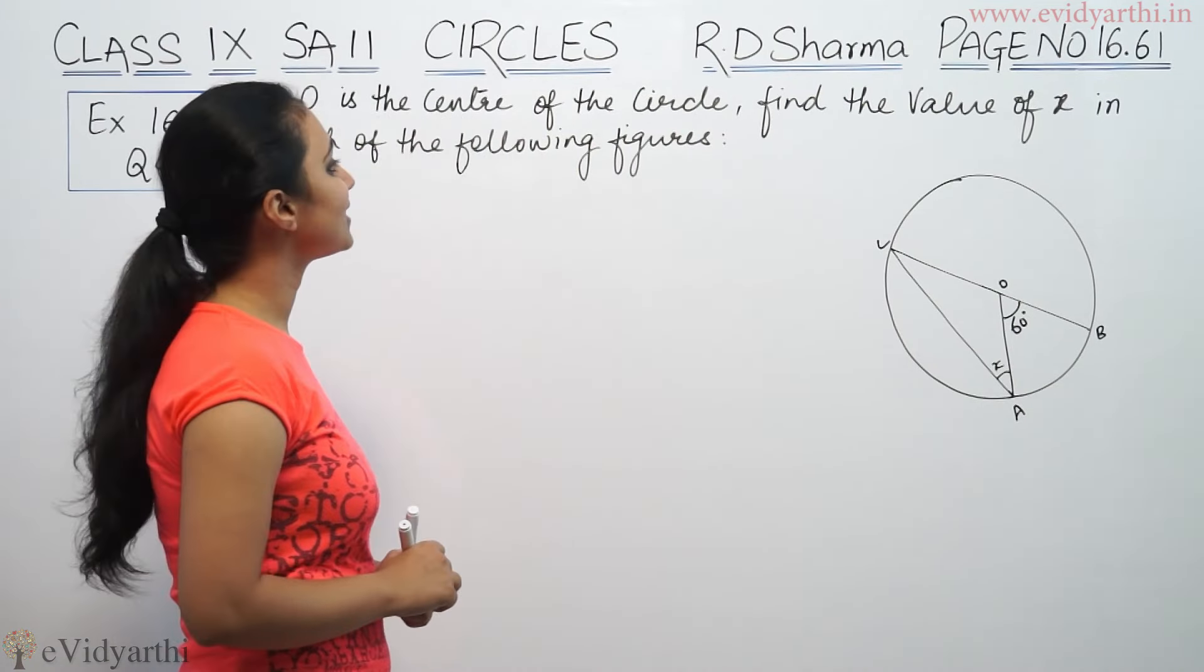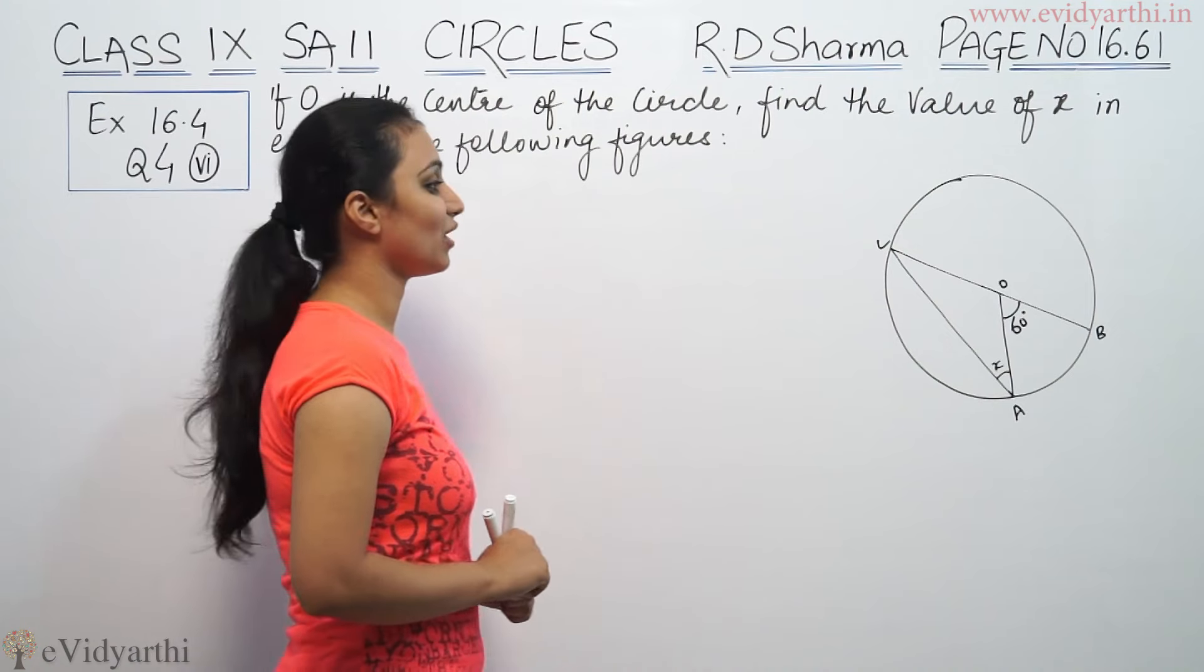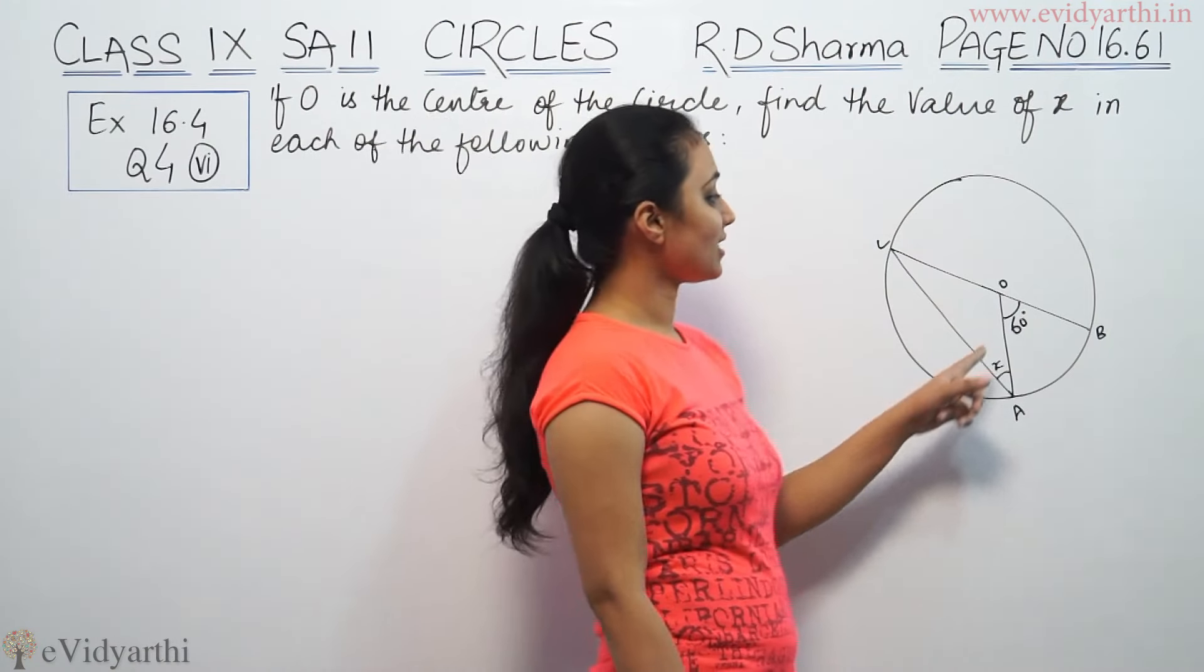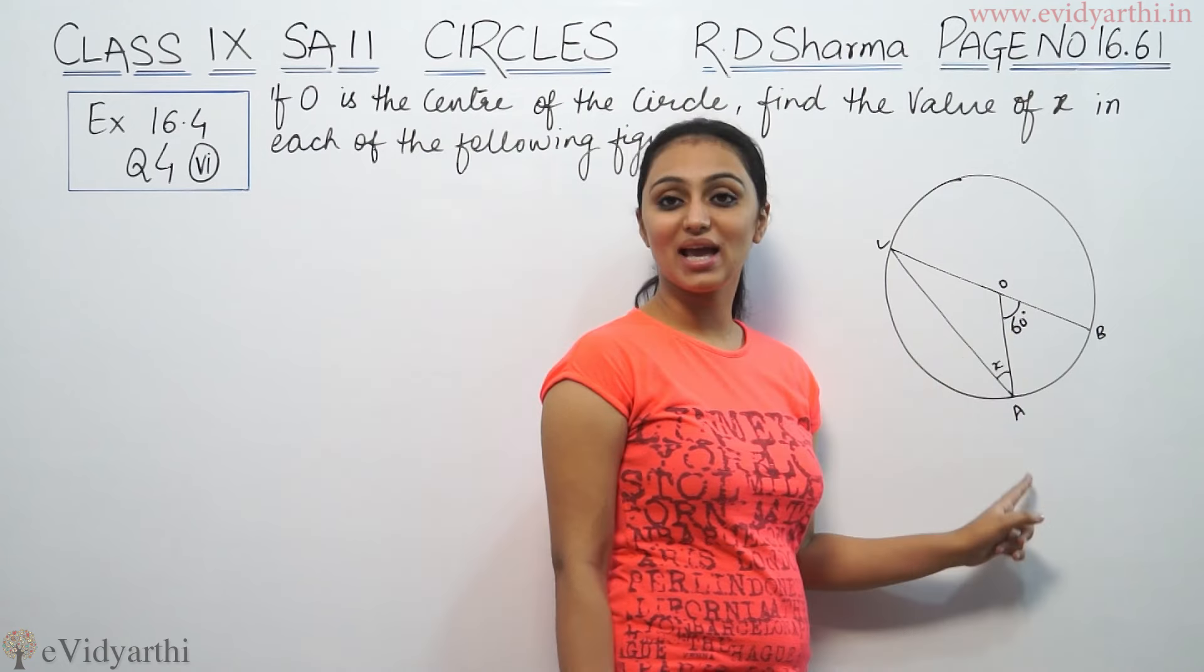This says, if O is the centre of the circle, find the value of X in each of the following figures. So, given O is the centre of circle, this is 60, we need to find X.